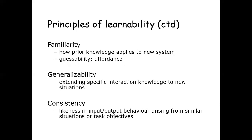The next principle of learnability is familiarity. The familiarity of an interactive system measures the correlation between the user's existing knowledge and the knowledge required for effective interaction. Properties of familiarity include catchability and affordance. The next is generalizability: users often try to extend their knowledge of specific interaction behavior to similar but previously unencountered situations. Generalizability supports this activity, leading to a more complete predictive model of the system for users.